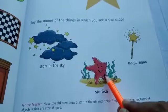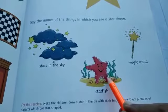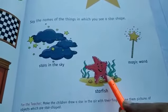And this is a starfish. What is this? This is a starfish, which is a star shape.